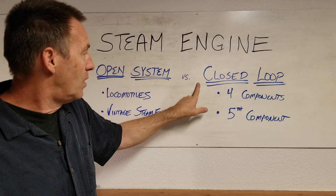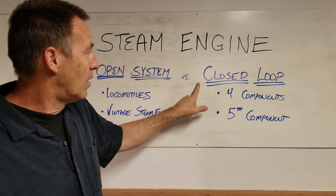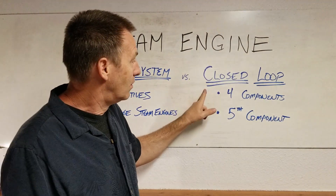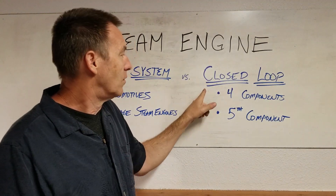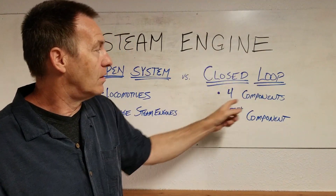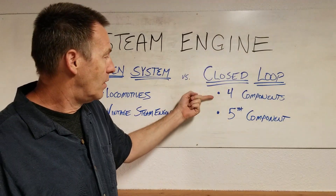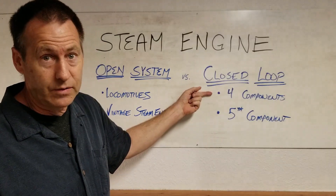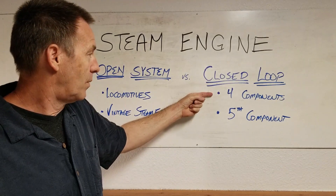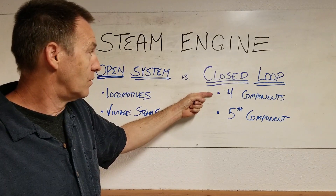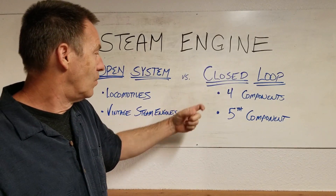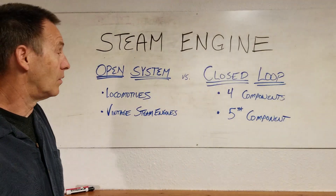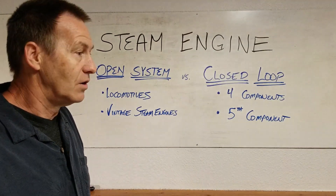In the closed loop, we have to capture that steam and condense it back into water so that it can go in a continuous loop. We'll talk about the traditional four components in a second, and then we're going to get into the fifth component, which changes things.